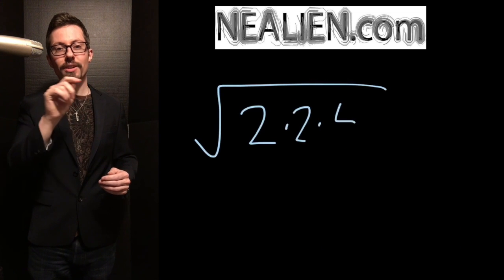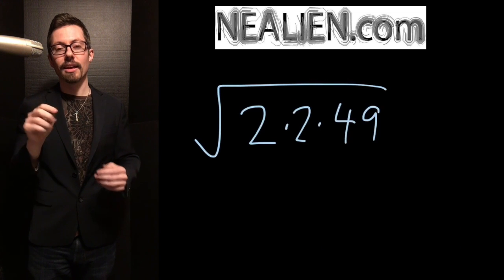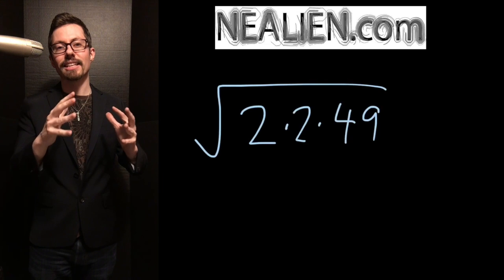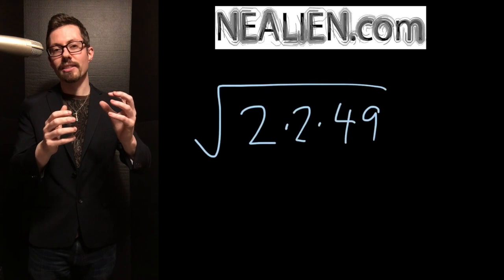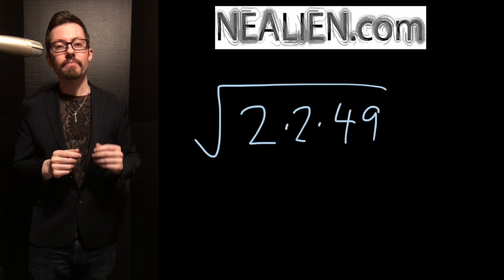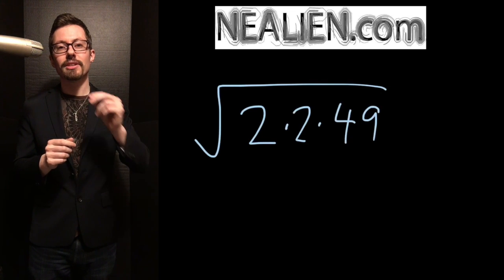Now within the radical, you have 2 times 2 times 49. If you divide by these things, you still need to keep them there because you're factoring them. You're dividing, but you're still writing them as a multiplication. So you've got 2 times 2 times 49.